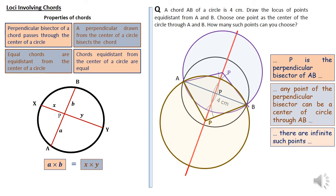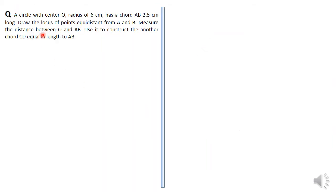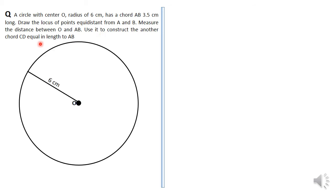We're told that a circle with center O and radius 6 centimeters has a chord AB 3.5 centimeters long. Draw the locus of points equidistant from A and B, measure the distance between O and AB, and use it to construct another chord CD equal in length to AB. We have the circle with radius 6 centimeters, center O marked with a black dot. Draw AB as a chord of 3.5 centimeters using your ruler, touching the circle at two points. Then use geometrical instruments to perpendicularly bisect AB: stand at A, open your compass to a radius bigger than half of AB, and make an arc.